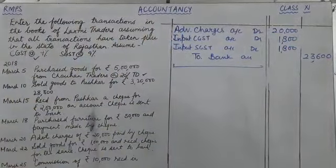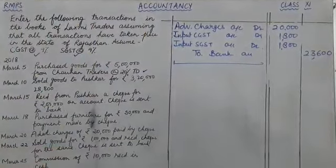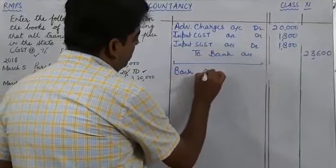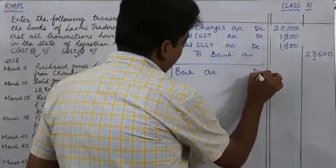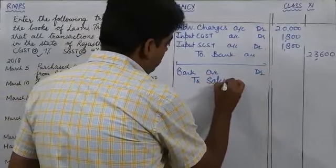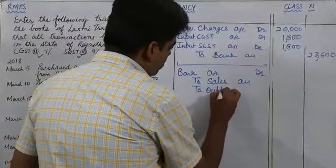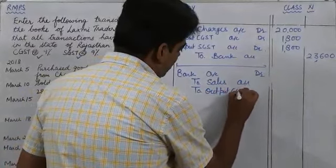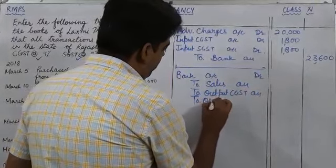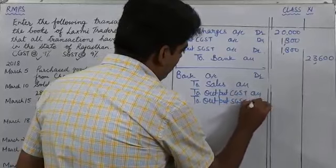Next is sold goods for rupees 1 lakh and received cheque for the sale. Cheque is sent to bank, so this is our cash sale and cheque is already deposited into bank. So bank account will be debited, and we credit sales account, output CGST account, and output SGST account.